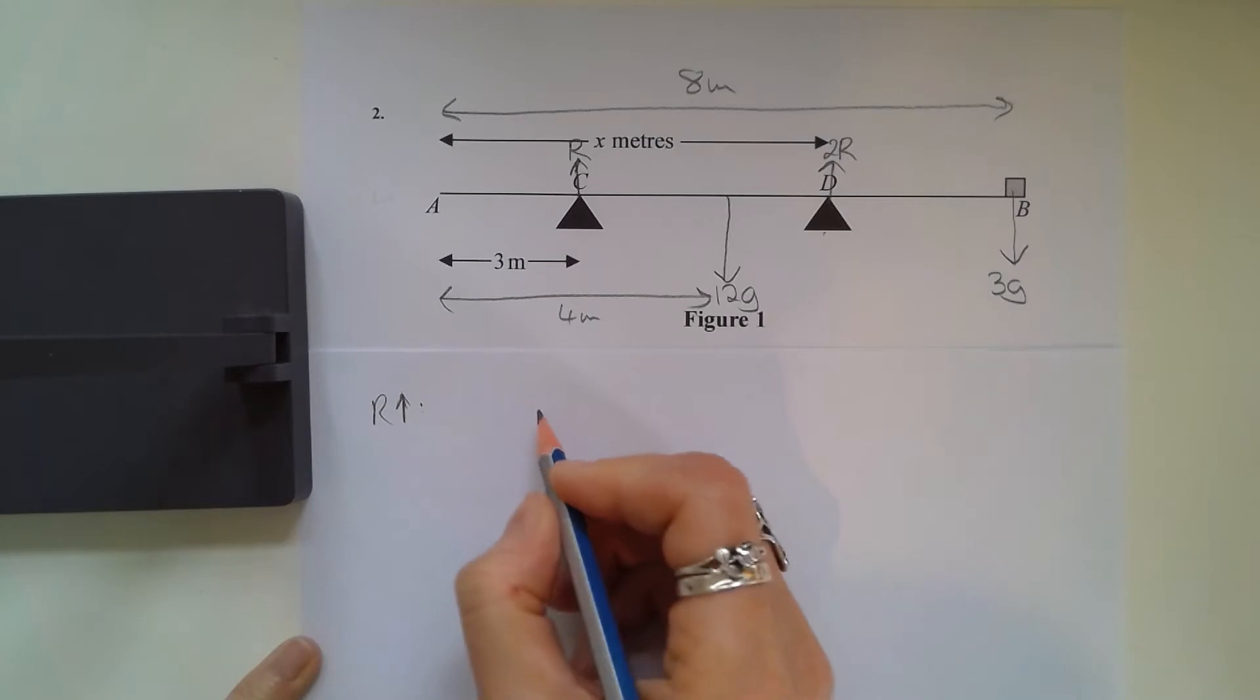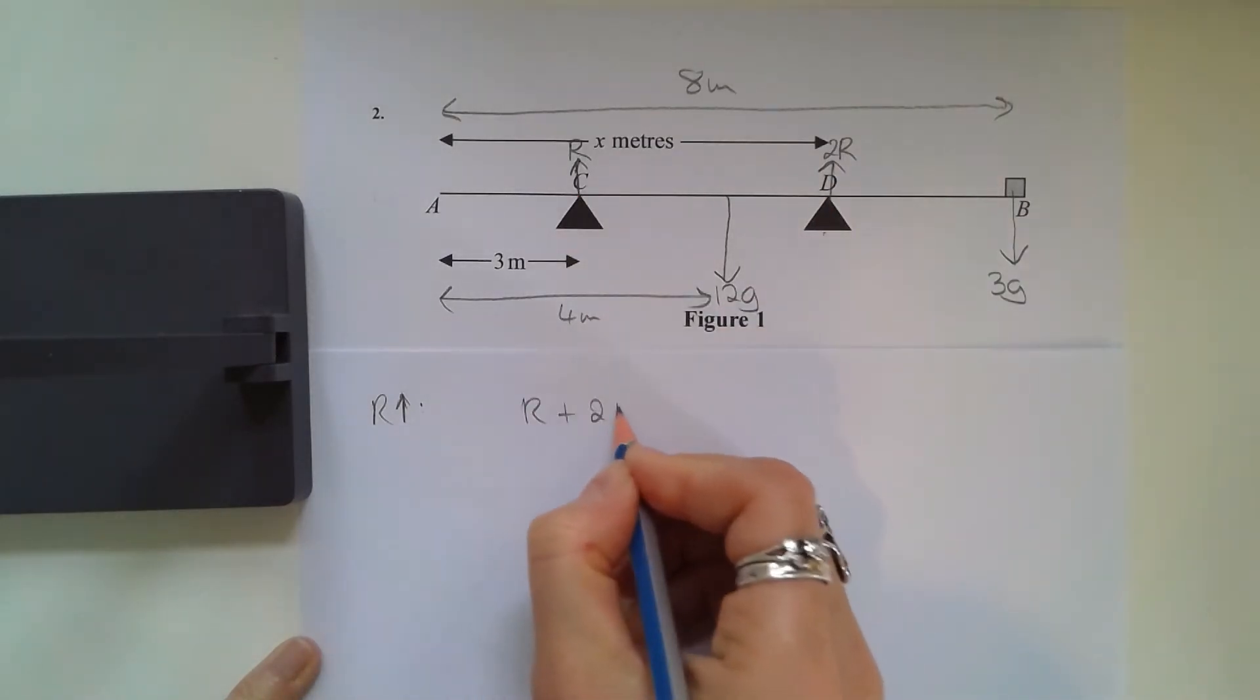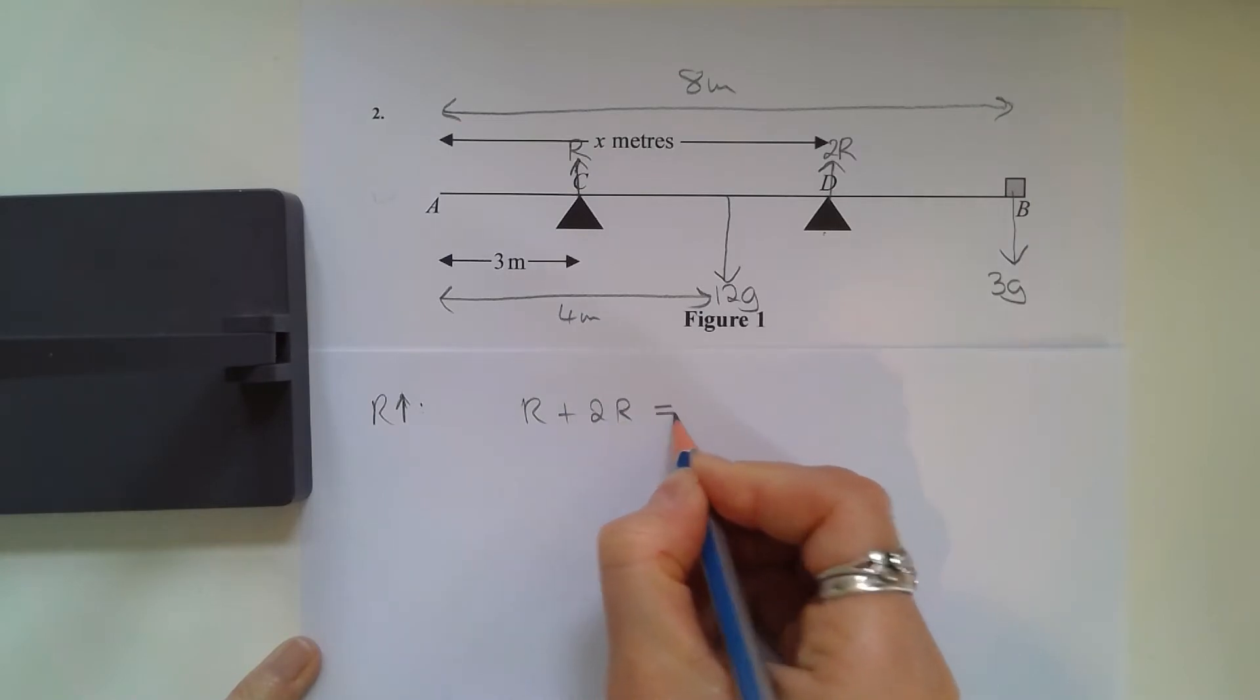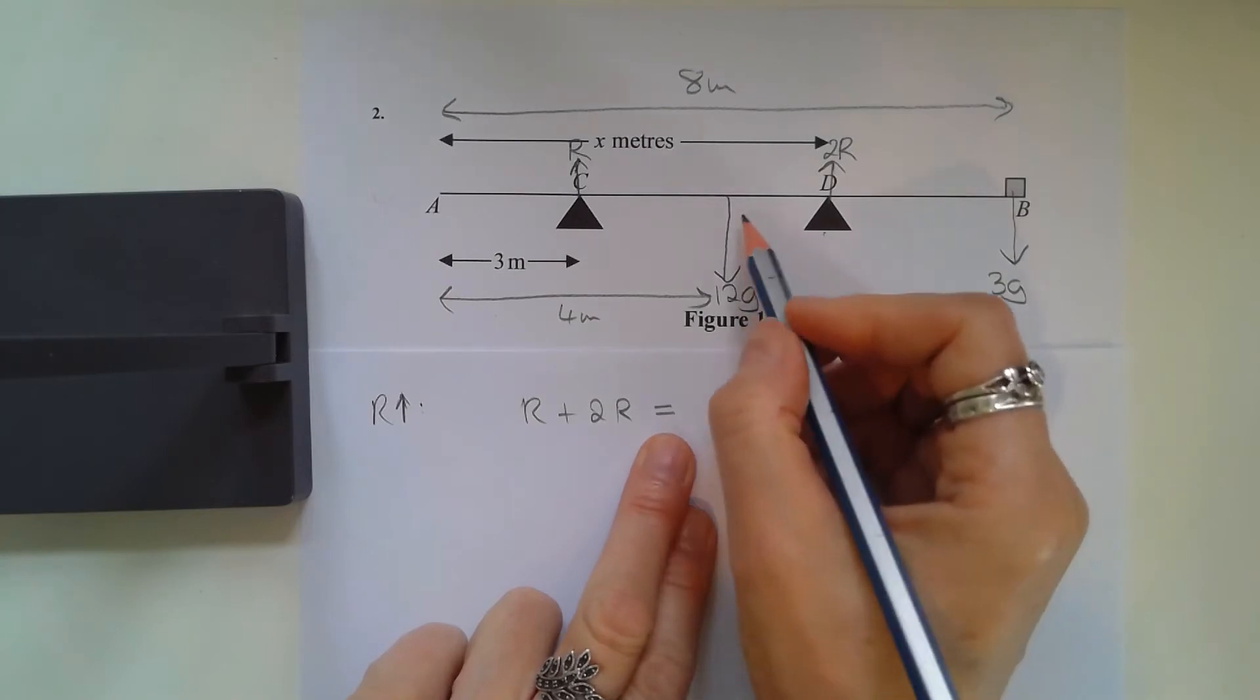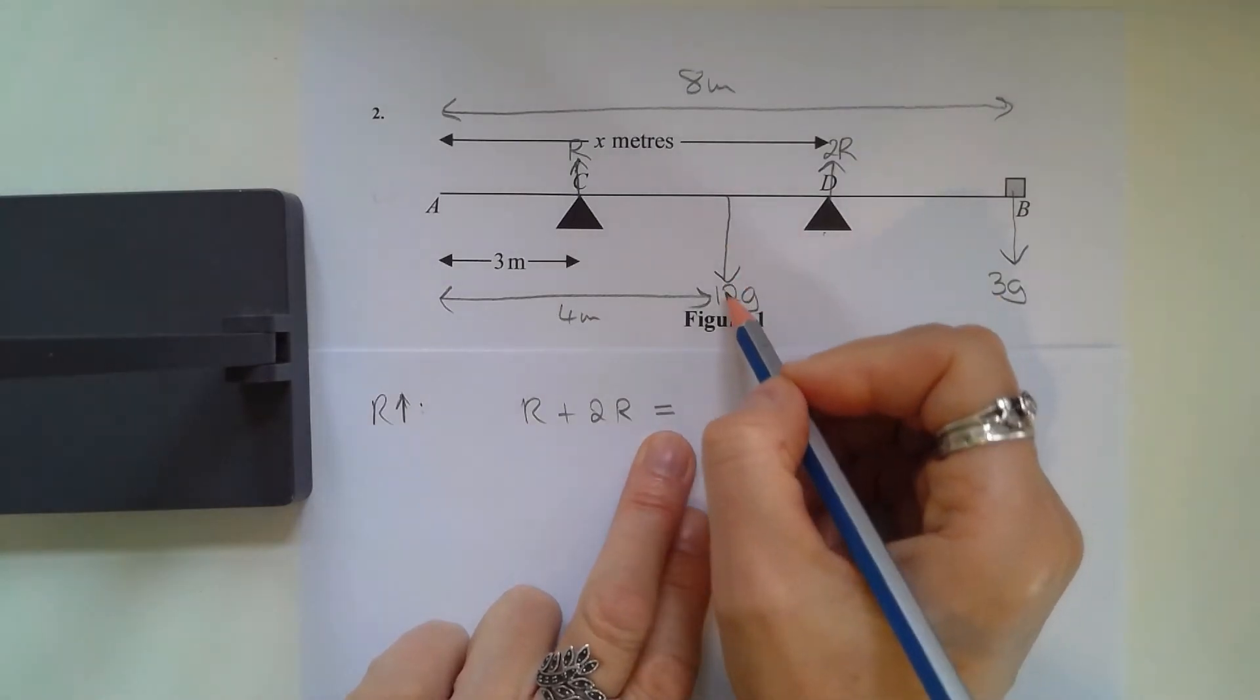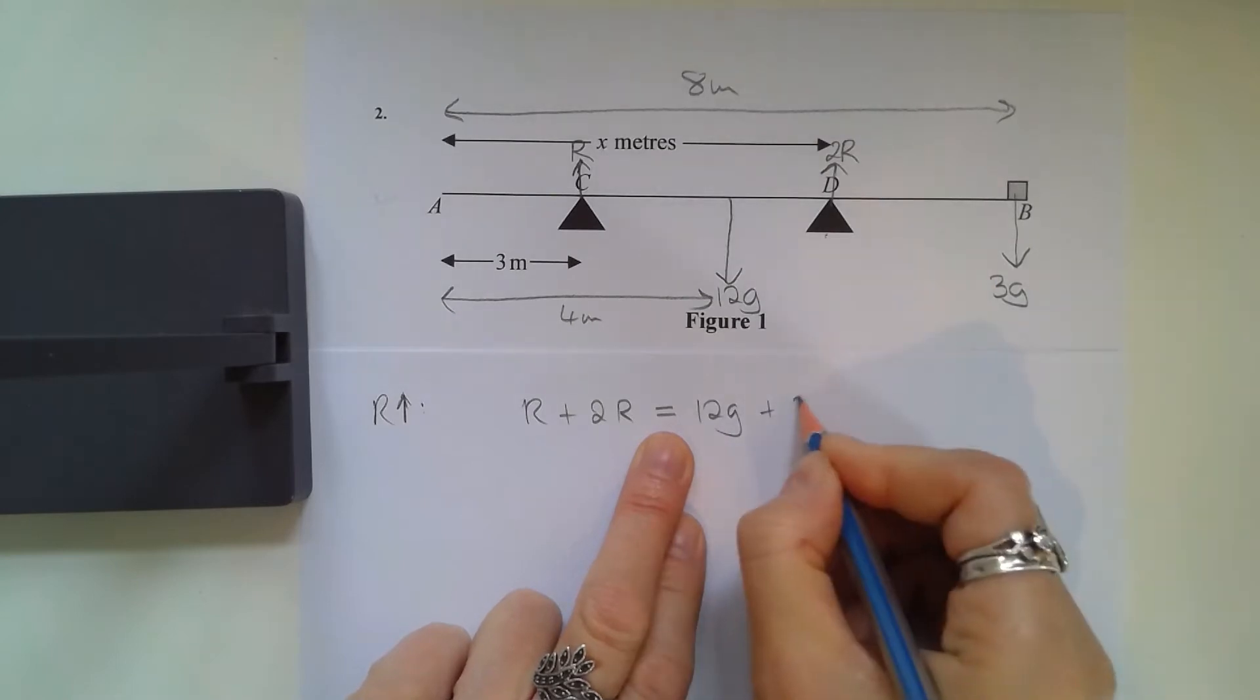So first of all, resolving vertically upwards, I have R plus 2R. Notice I'm not simplifying these because you get a mark for just writing out with all the terms, and if you try and simplify and get it wrong, you could lose your method mark. So 12g downwards and 3g downwards.